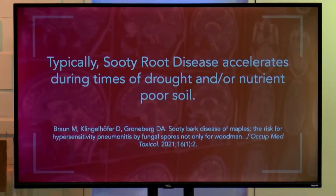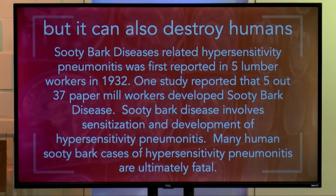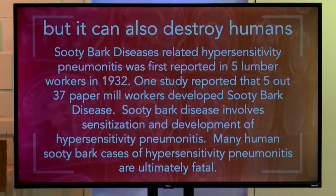But it's a little different as it crosses from wood and bark to we humans. Sooty bark disease accelerates during times of drought and nutrient-poor soil. But sooty bark disease also destroys humans. Sooty bark disease and related hypersensitivity pneumonitis was first reported in five lumberjacks — lumber workers — in 1932, 90 years ago. One study reported that five out of 37 paper mill workers developed sooty bark disease.